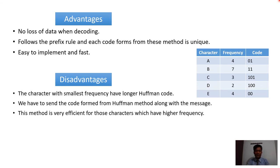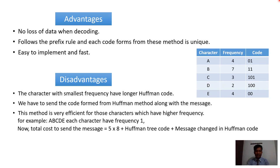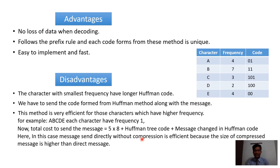This method is very efficient for characters with higher frequency. To prove this, take an example where A, B, C, D, and E each have frequency 1. In this case, the total cost of sending the compressed message — 5 characters into 8 bits plus the Huffman tree code plus the Huffman-encoded message — is actually larger than sending directly without compression. So for equal or very low frequencies, sending the message directly without compression is more efficient.